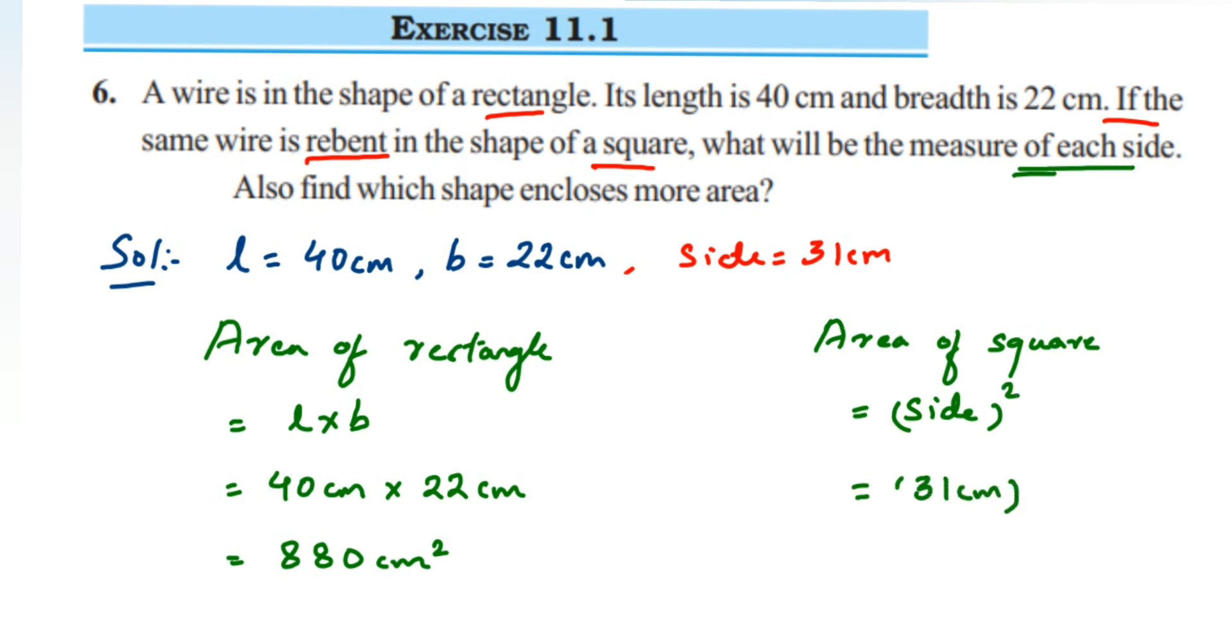31 squared is 961, so we'll get 961 square centimeters. That's it - we have calculated the area of both.